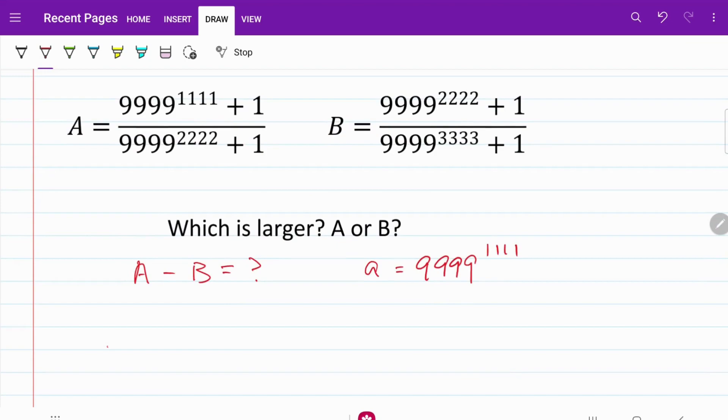Then my fraction A is going to be equal to a plus 1 over a squared plus 1. Likewise, for fraction B, that's going to be equal to a squared plus 1 over a cubed plus 1.